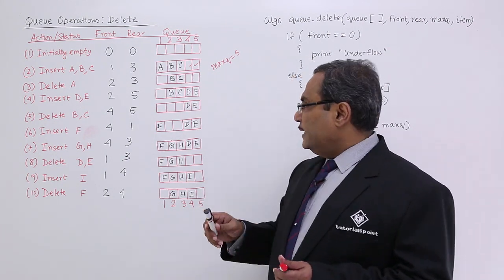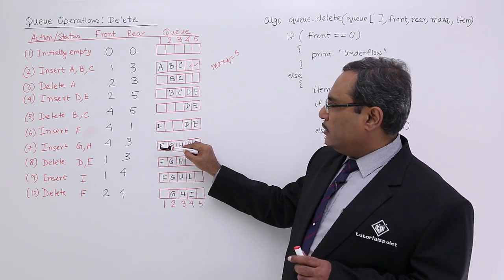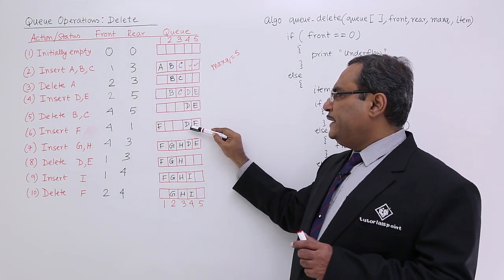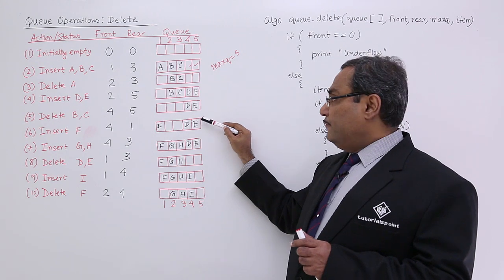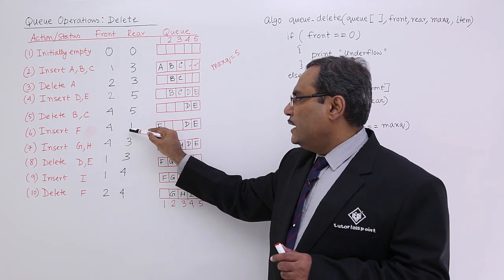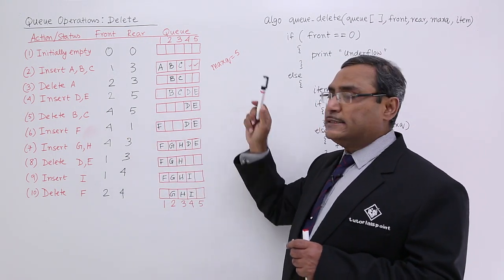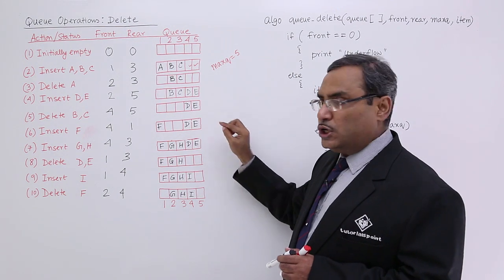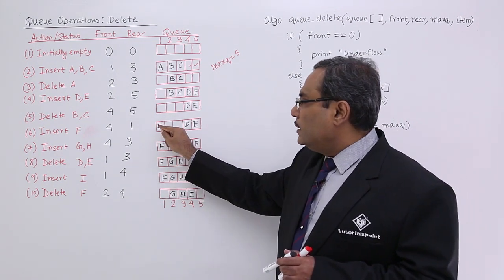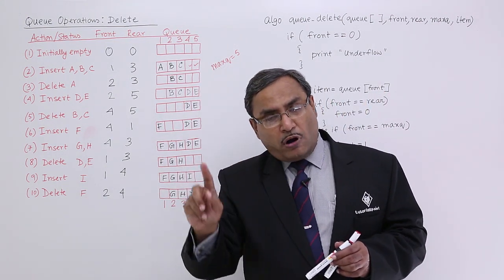Case study number 2: let us suppose in this particular case the front is equal to 4, and due to the circular logic, rear is equal to 1. Now if I delete D, then front will be 5 and rear will be 1. Now, when front is equal to max_queue and we perform the deletion operation, then E will get deleted and front will come to 1. So that means if front is equal to max_queue, then front is equal to 1.